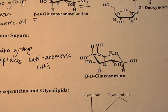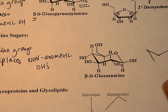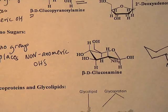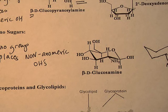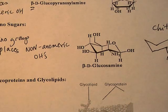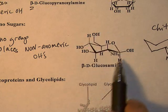Often, these amino groups are acetylated — meaning instead of existing as NH2, you have NH with an acetyl group attached. That's how amino sugars are commonly found. These acetylated glucosamines are an important component in bacterial cell walls, and a major component in chitin, which is a polymer of N-acetylated glucosamine.